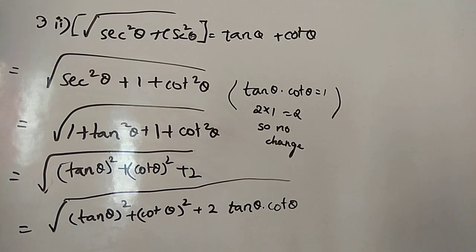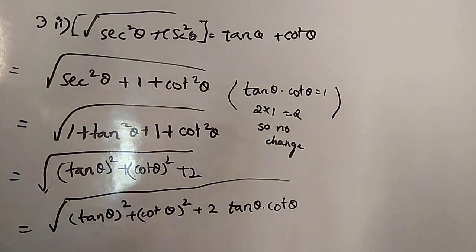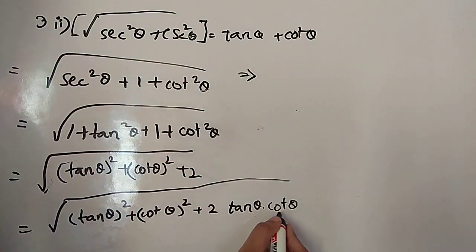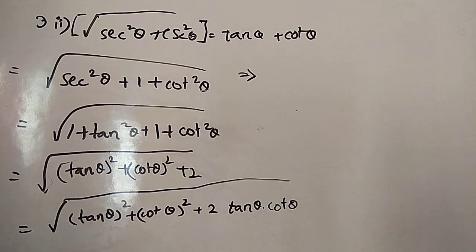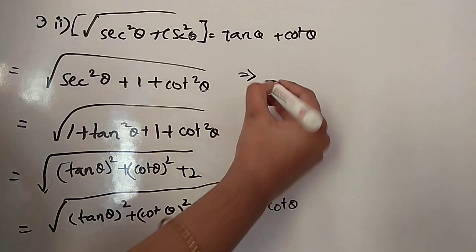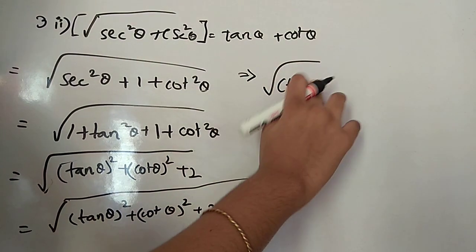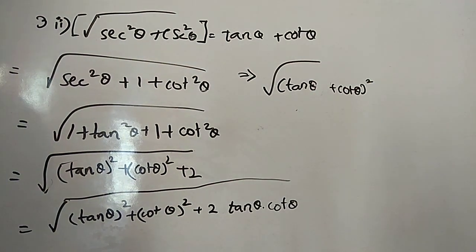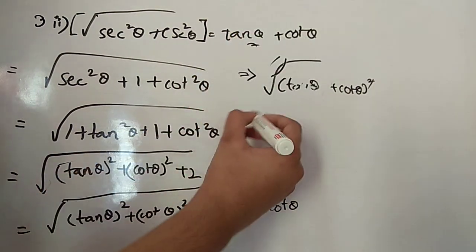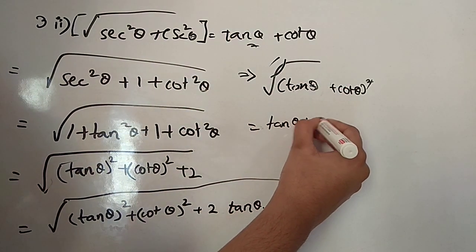So we have tan squared theta plus cot squared theta plus 2 times tan theta times cot theta, which is in the form a squared plus b squared plus 2ab — that is (a + b) squared. Taking the square root gives us tan theta plus cot theta, which is the RHS. Proved.